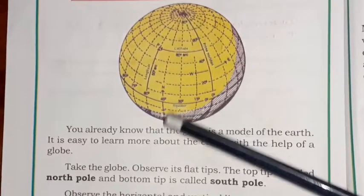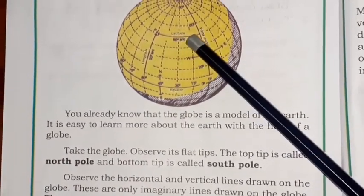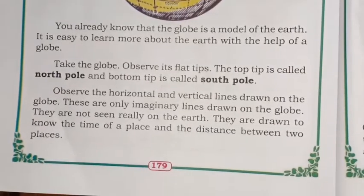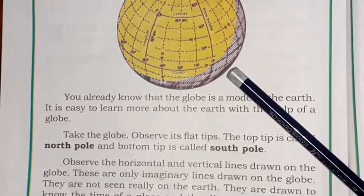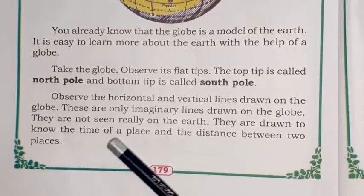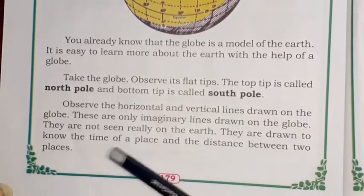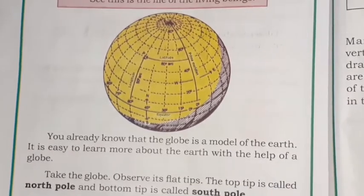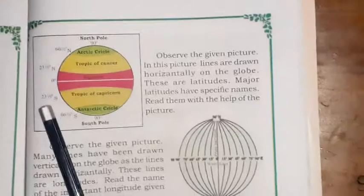Observe the horizontal and vertical lines drawn on the globe. These are imaginary lines — they are not actually drawn on the earth by itself. They are drawn to help us know the time of a place and the distance between two places. These lines are not seen in reality on the earth; they are drawn just to find the difference in distance and time between places.